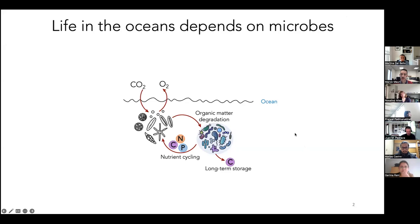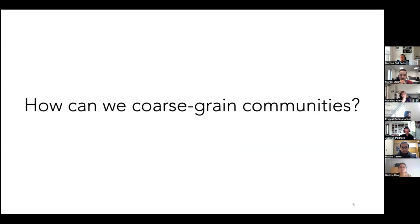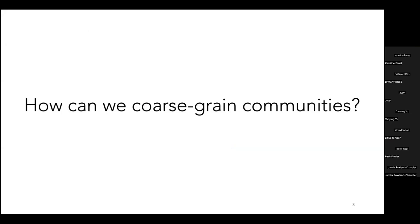Together with phytoplankton, bacteria are responsible for producing half of the oxygen that we breathe. They also regulate the production of important greenhouse gases like carbon dioxide, methane, and nitrous oxide. One important question in understanding how communities form and respond to environmental changes is how we can coarse-grain these communities — in other words, what are the relevant traits we should study to understand how a community responds to changes in the environment.